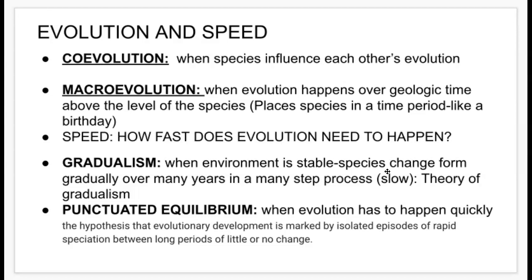In punctuated equilibrium, evolution happens quickly — it's the hypothesis that evolutionary development is marked by isolated episodes of rapid speciation between long periods of little or no change.